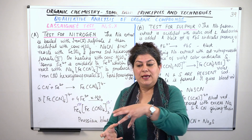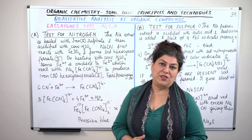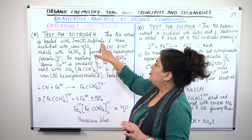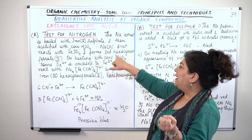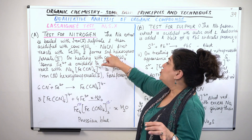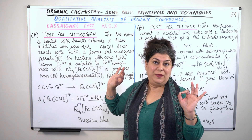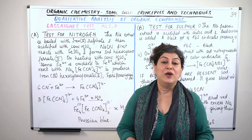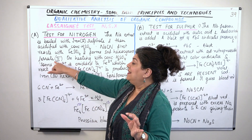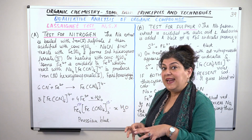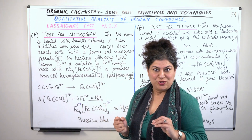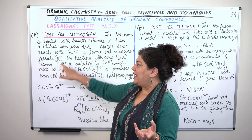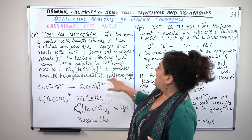What actually happens when we heat it with ferrous sulfate and concentrated sulfuric acid? In the first step we add ferrous sulfate (iron(II) sulfate) to the sodium extract. The sodium cyanide combines with the ferrous sulfate and results in the formation of sodium hexacyanoferrate(II). The cyanide ion from the sodium extract combines with the ferrous ions of the ferrous sulfate, resulting in the formation of the hexacyanoferrate ion.